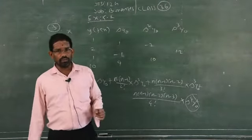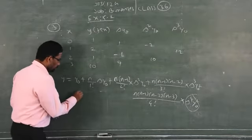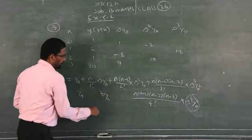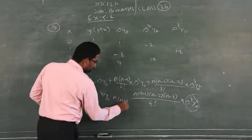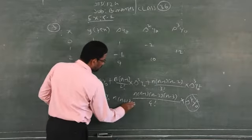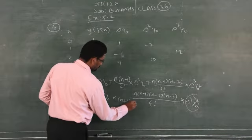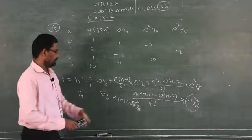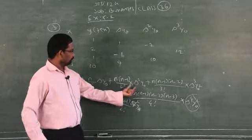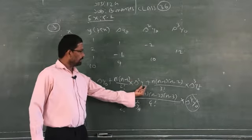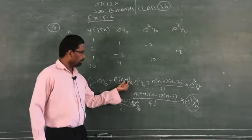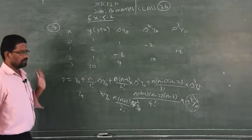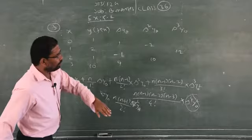For the backward formula, in place of y₀ write yₙ, in place of delta write nabla, and in place of minus 1, minus 2, minus 3 write plus 1, plus 2, plus 3. That is the complete difference between the backward formula and the forward formula. Here in question 3 it says forward interpolation, so we can use only the forward method.